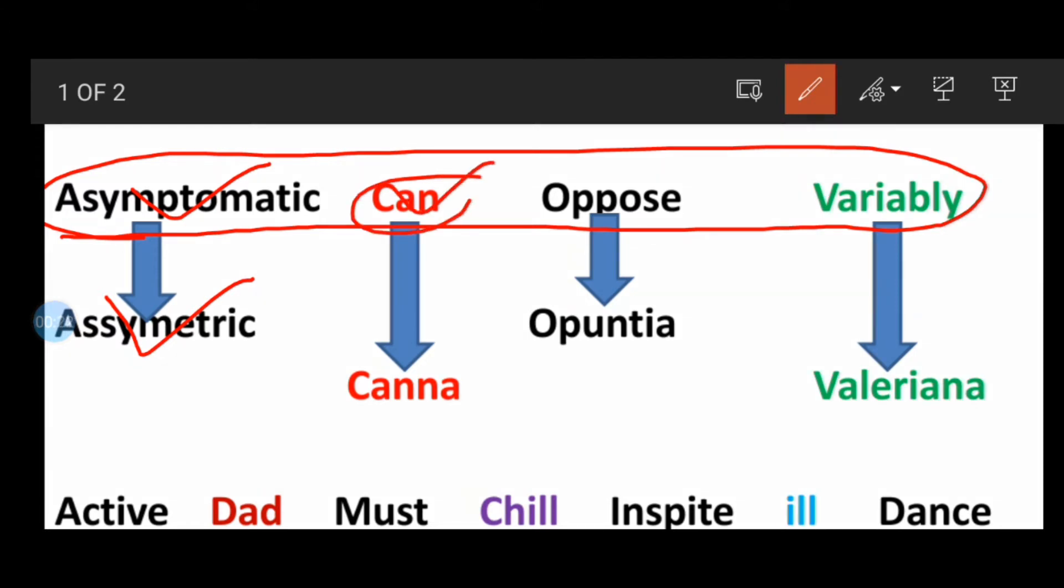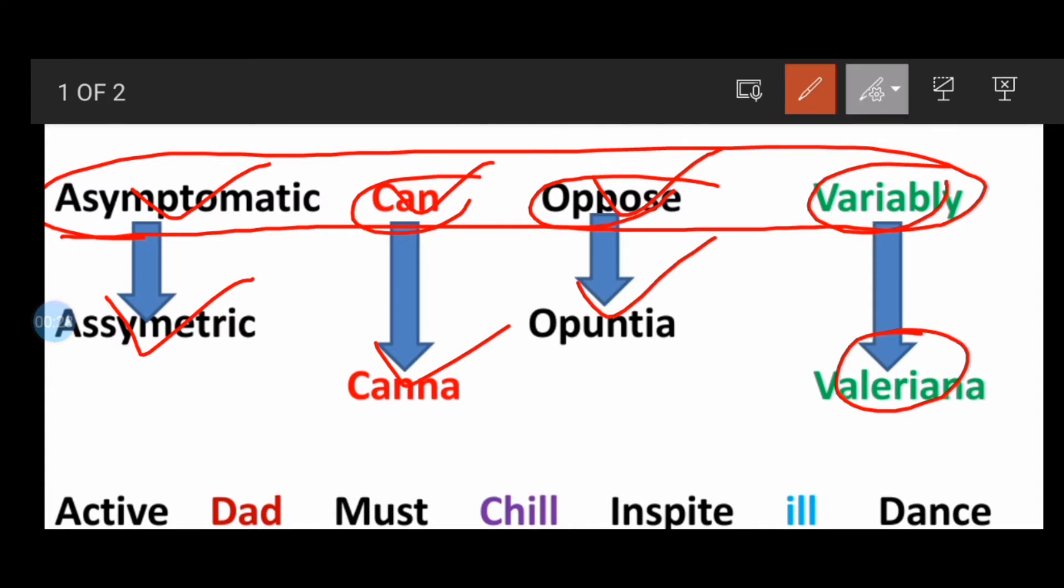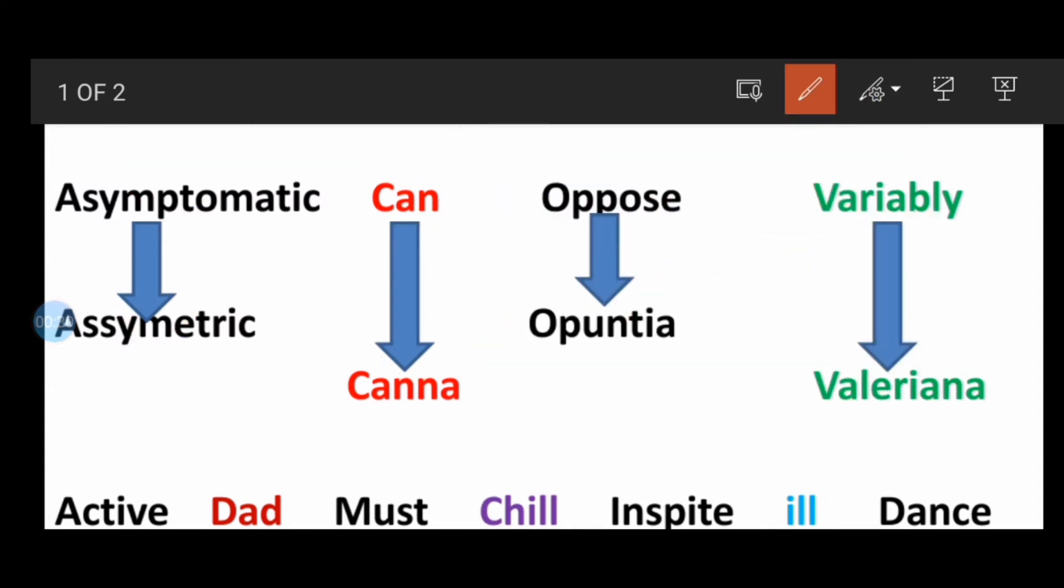First one is can. Can stands for Canna. Oppose means Opuntia and variably means Valeriana. So these are the examples of asymmetric flower.